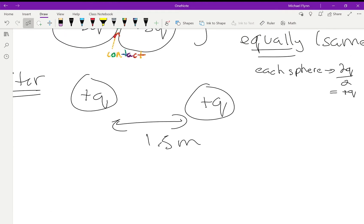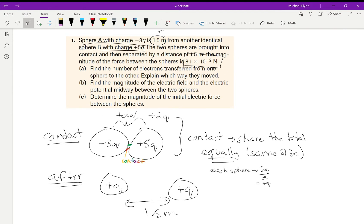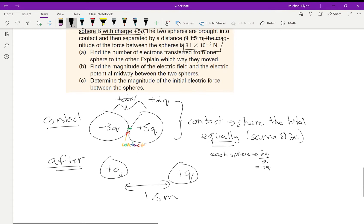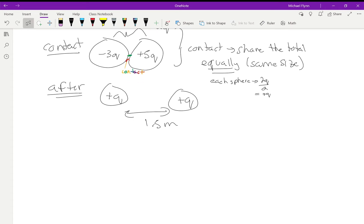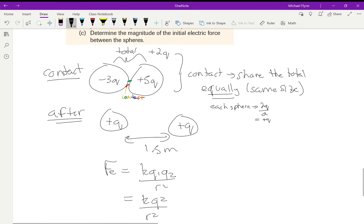Now it says you separate them to 1.5 meters, and the next thing it says is that when they're separated at this distance, the force between them is 8.1 times 10 to the negative 2 newtons. So now we're just going to do the equation: the electric force is k q1 q2 over r squared. Since they have the same charge, k q squared over r squared, so the electric force is 8.1 times 10 to the negative 2.